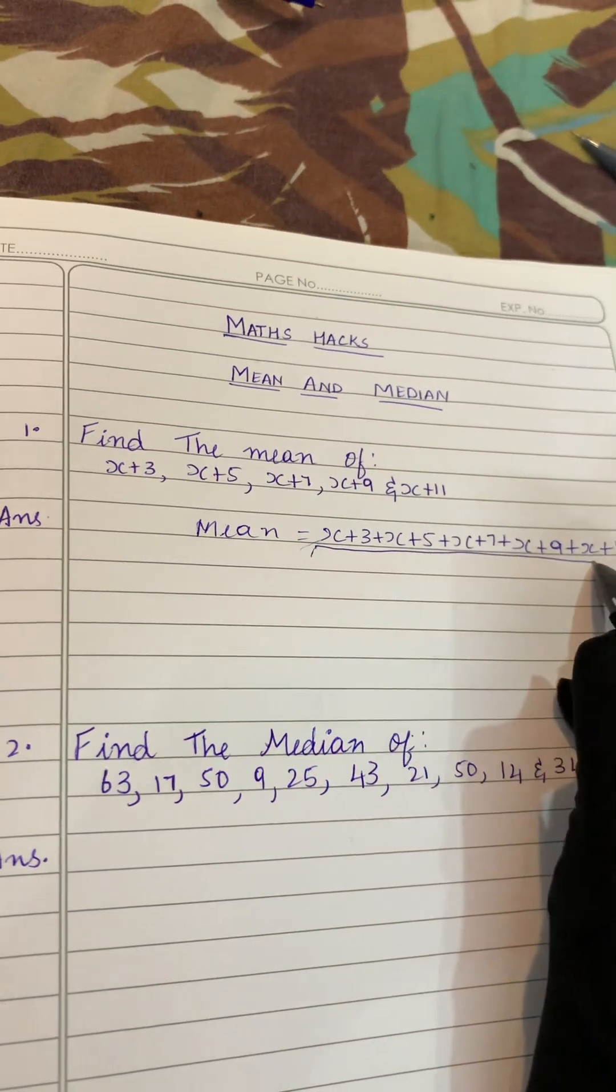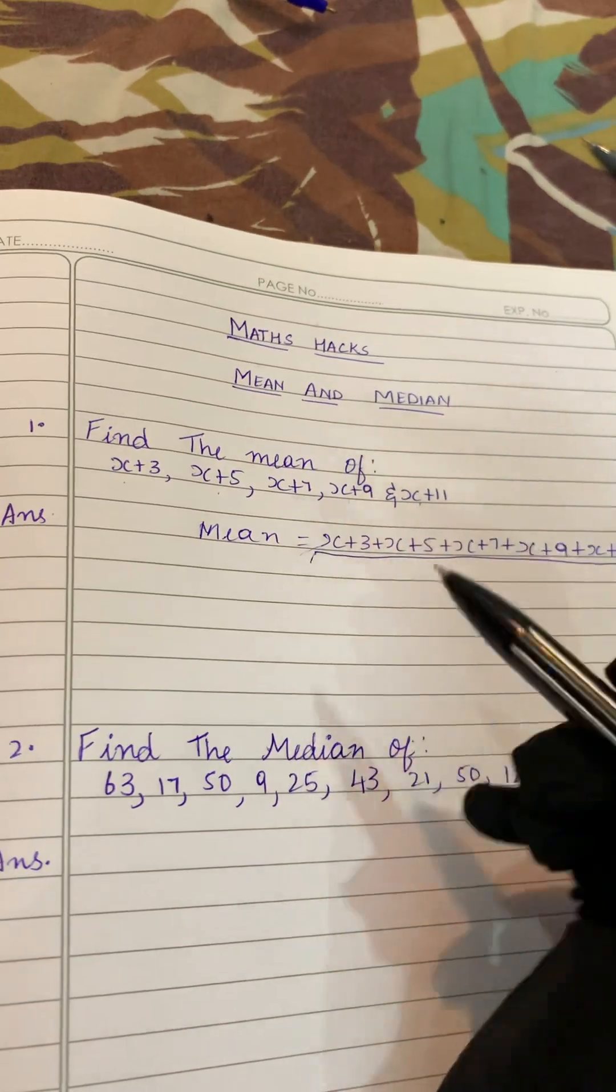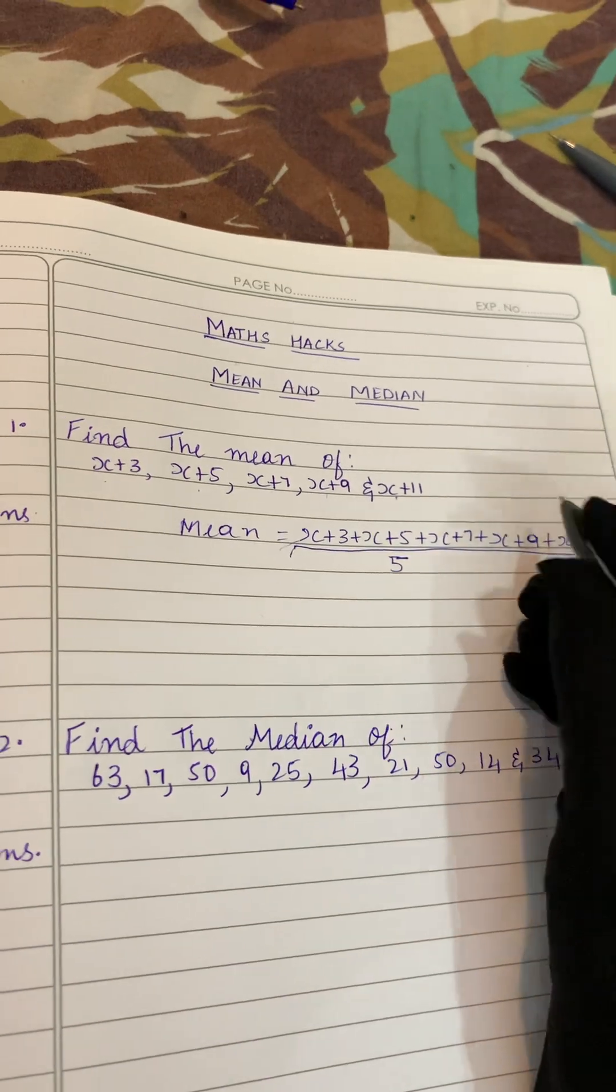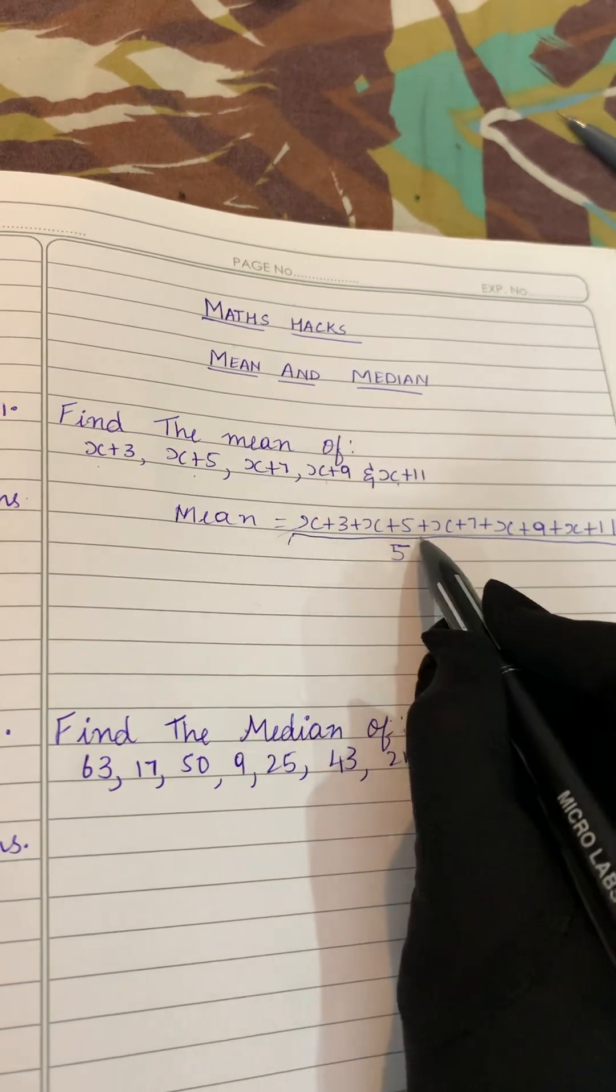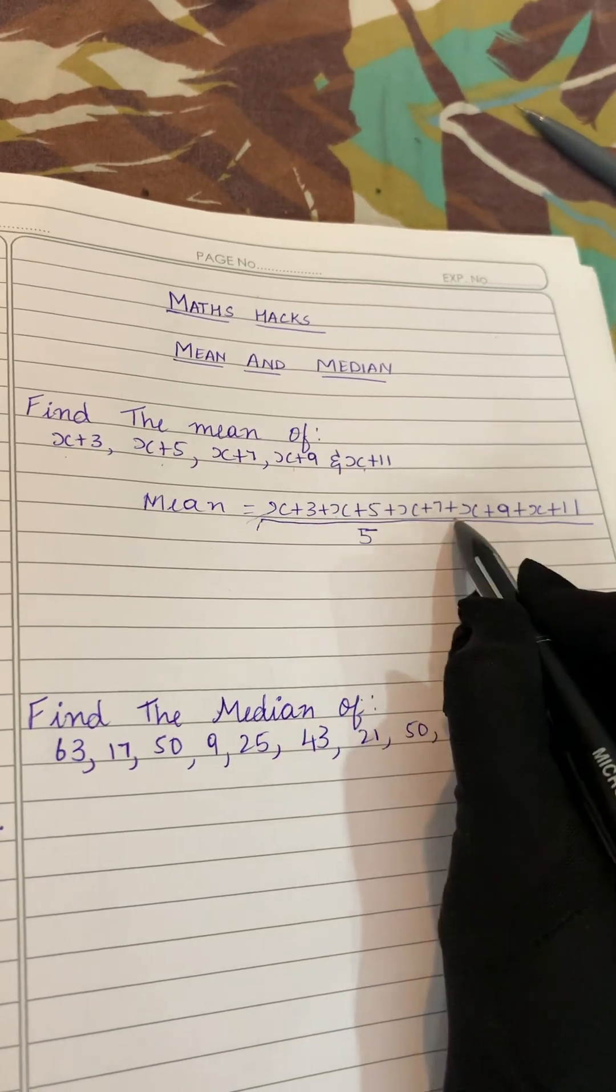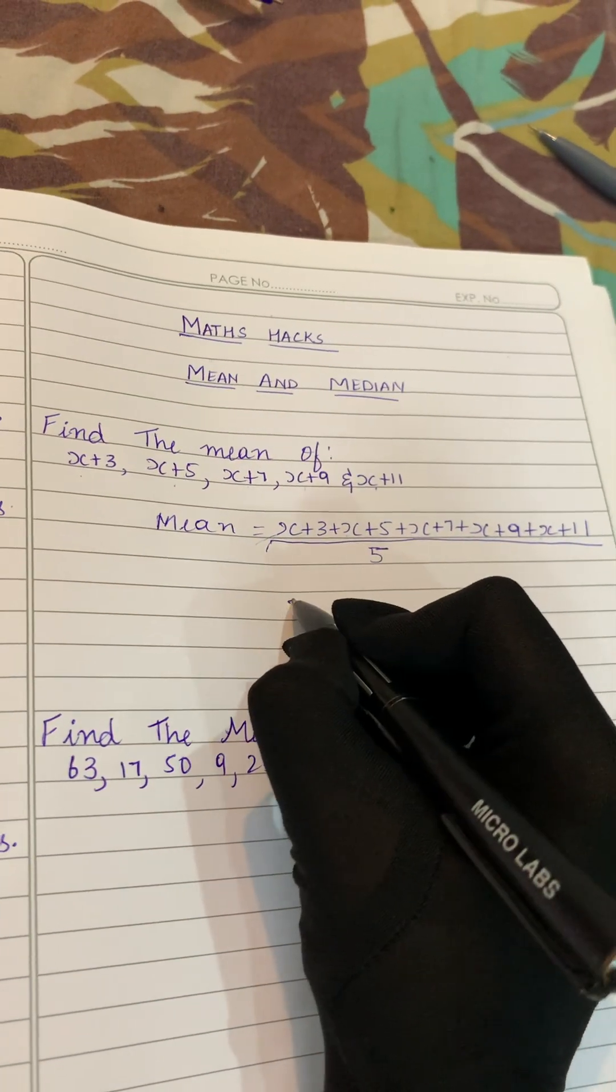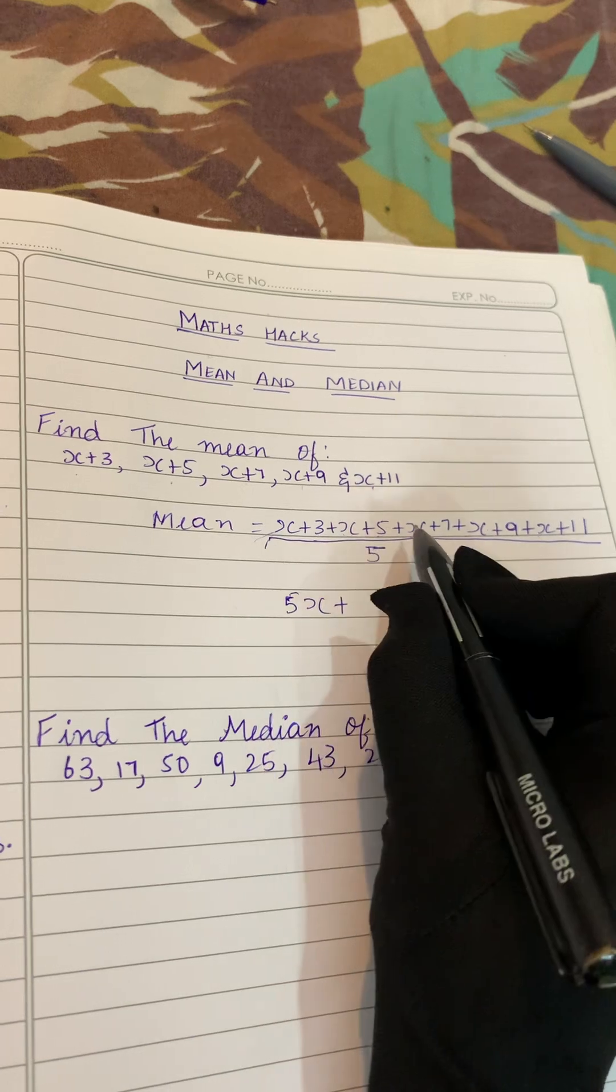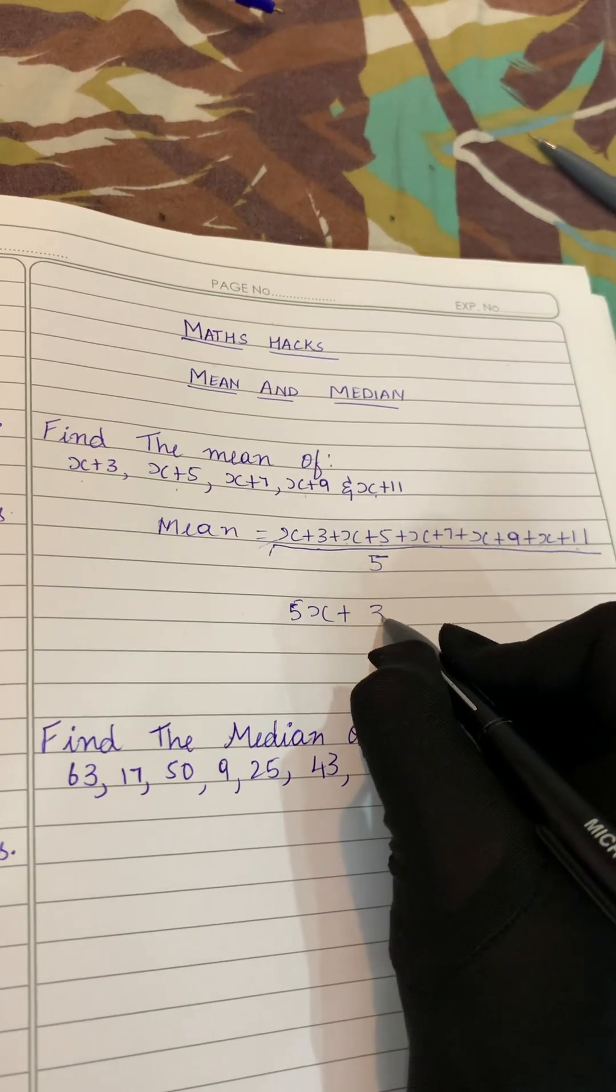Divided by number of terms. How many terms do we have? One, two, three, four, and five. We have five terms here, so we'll divide it with five. Now let's add, sum is addition. We'll add all these numbers. First, let's add the x's. How many x do we have? One, two, three, four, and five. We have five x.